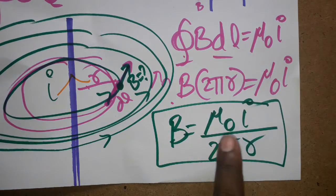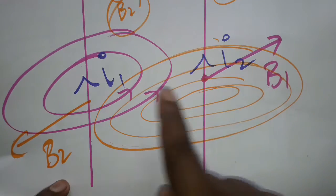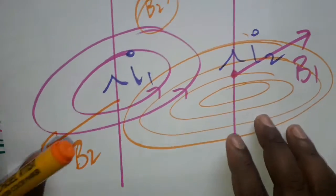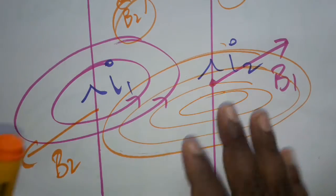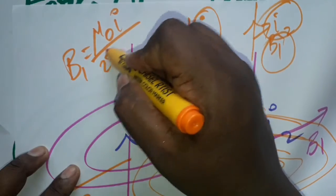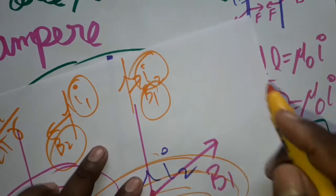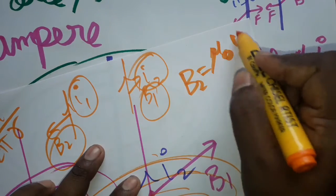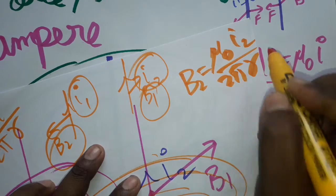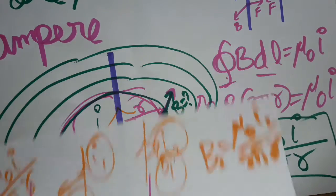We already know for a straight current-carrying conductor, the magnetic field B equals mu-naught i divided by 2πr. For two wires: B1 equals mu-naught times I1 divided by 2πr, where r is the distance between the two wires. Similarly, B2 equals mu-naught times I2 divided by 2πr.